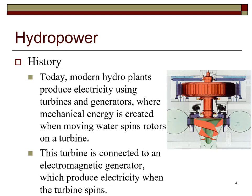Modern hydro plants produce electricity using turbines and generators, where the mechanical energy is created when moving water spins rotors on a turbine. The turbine is connected to an electromagnetic generator which produces electricity when the turbine spins.